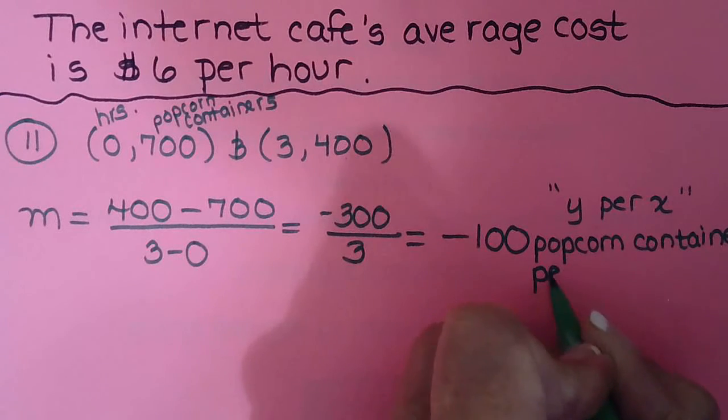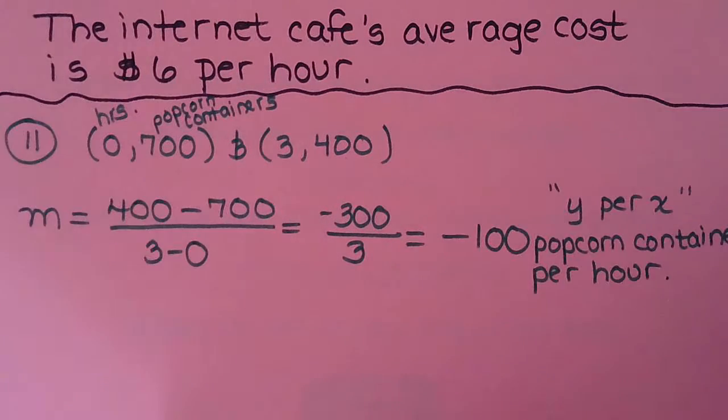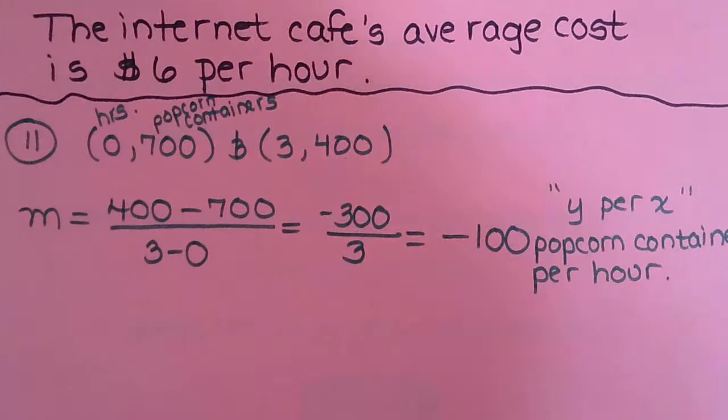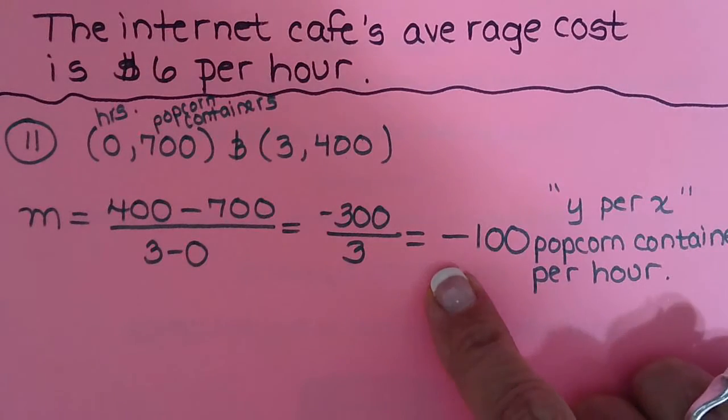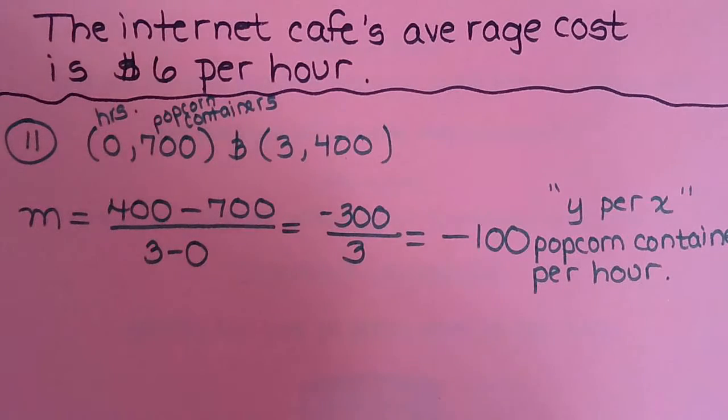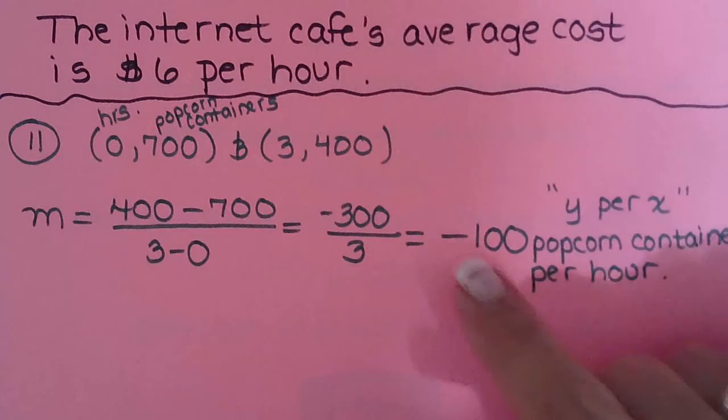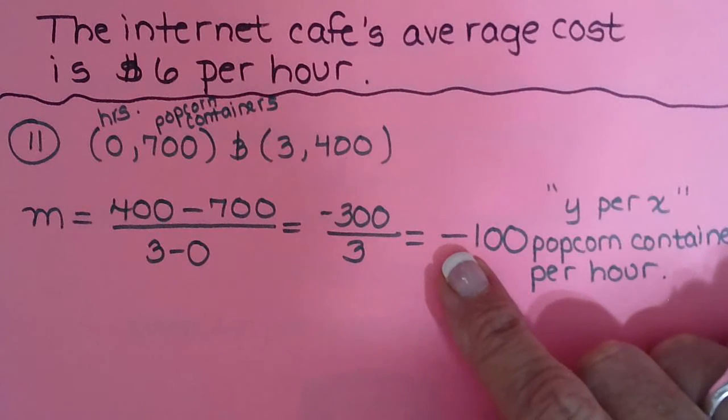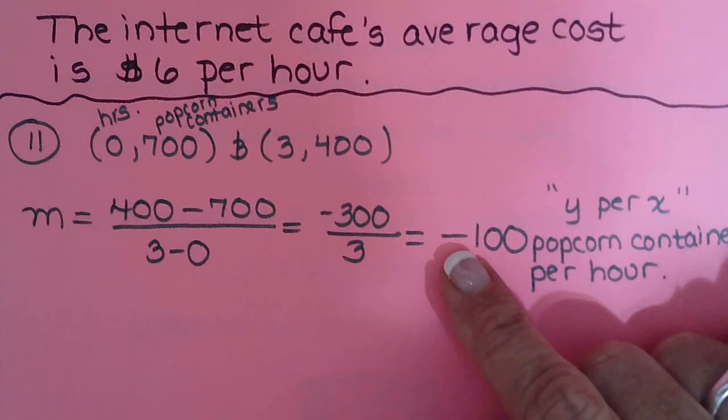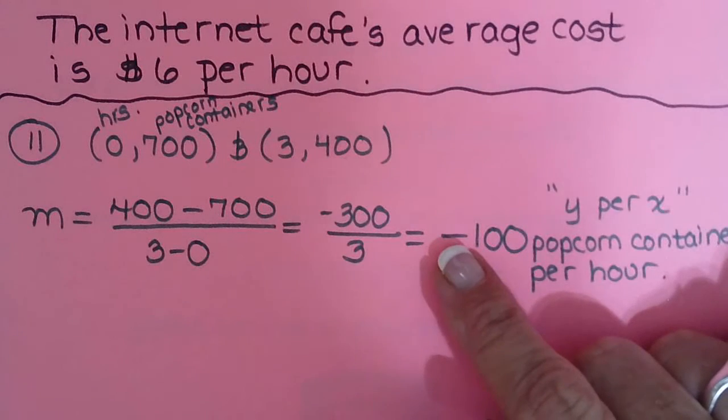So remember how I said you should use the word increasing when it's a positive slope, or decreasing when it's a negative slope. So this one's going to use the word decreasing. And do you also remember when we were talking about slope on the front that we said you never put a negative when you're writing the word sentence? You use a word that means negative, like decreasing, going down, diminishing something.